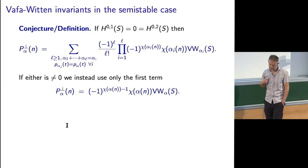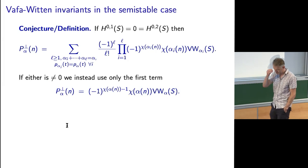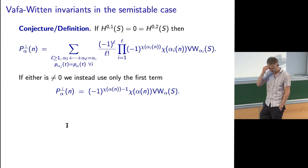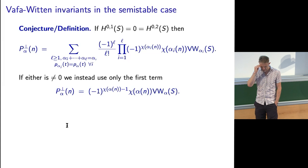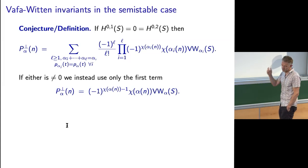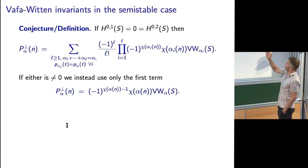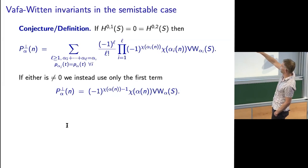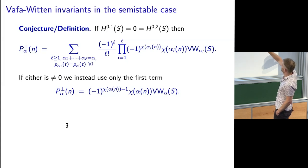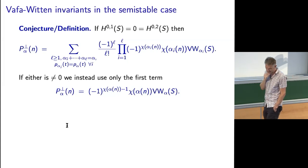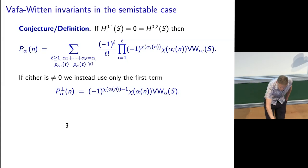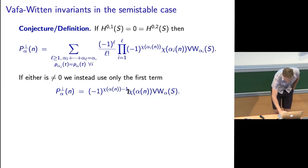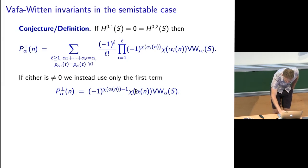It's not entirely clear this is comprehensible unless you're familiar with Joyce or Kontsevich-Soibelman wall-crossing formulae. The way to understand this is to ignore the scary-looking formula and look at the second formula. If the surface has no one-forms or two-forms on it, that's the formula, and the way to understand it is that it's rather easy — ignore the sign; there's always a sign in DT theory.